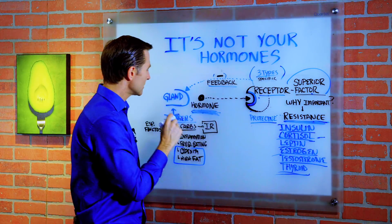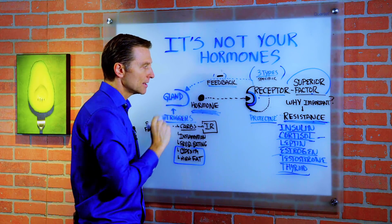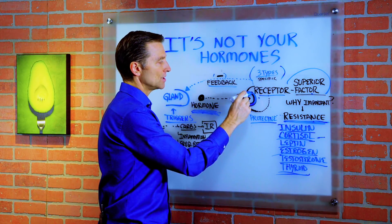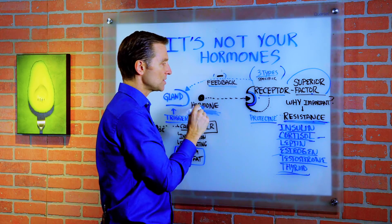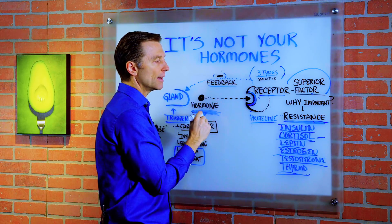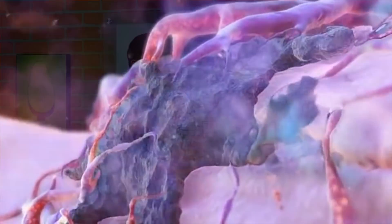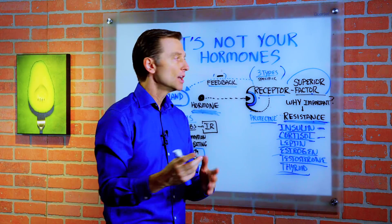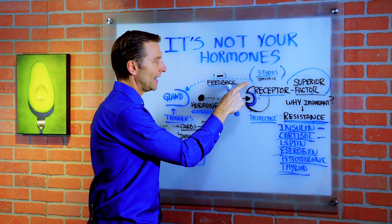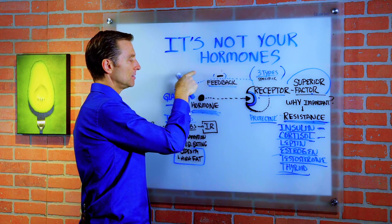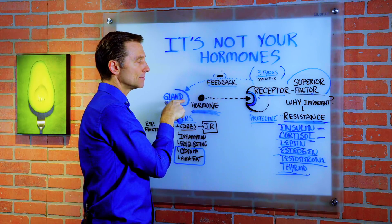Something is triggering the gland to make too much of a hormone, and the cell is going to protect you because too much of certain hormones — especially cortisol and insulin — can be very destructive on the body. When you have insulin resistance, you no longer have that feedback loop.